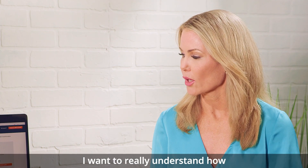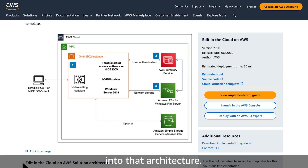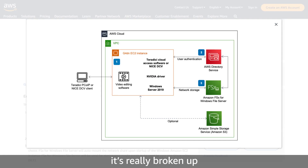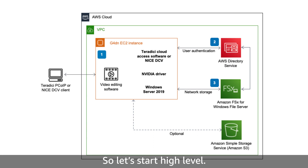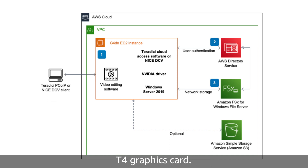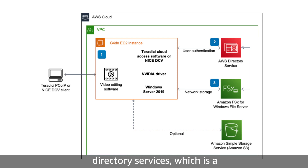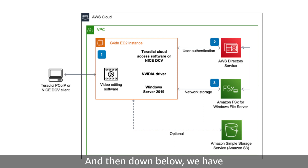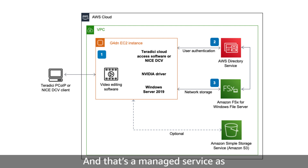The architecture is broken up into multiple components. It has a VPC and availability zones to put together all the components. We have our G4DN EC2 instance, which is your editorial host, and that uses our NVIDIA T4 graphics card so you get a familiar experience for your editorial workflows. We also have AWS Directory Services, which is a managed service for Active Directory — that's our authentication system. And then we have FSx for Windows File Server, which is our NAS, or shared file system, and that's a managed service as well.